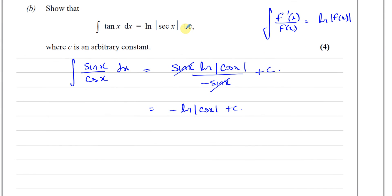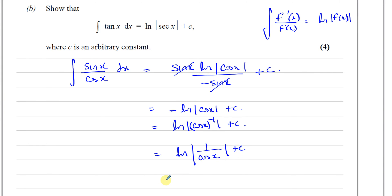Now, how do we end up with sec x? Because of the minus one, we can use the power law. So this is like ln|cos x|^(−1) + C. This doesn't mean the inverse cosine — it means cos x to the power of minus one, i.e. its reciprocal. So this is the same as ln|1/cos x| + C. We know that 1/cos x is sec x, so this is ln|sec x| + C. That's what we had to prove, using the reverse of the chain rule.